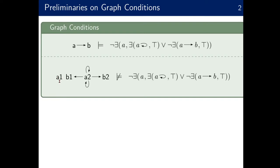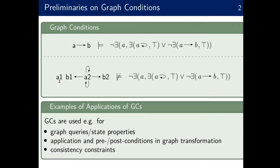Why are graph conditions important? As seen in the previous talk, they are used for many different purposes: to state graph queries for graph databases, to express state properties, as application conditions or pre/post conditions in verifying graph transformation systems, and for expressing consistency constraints in graphs. So they are everywhere, basically.